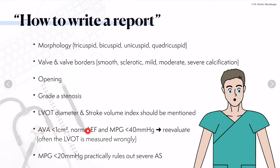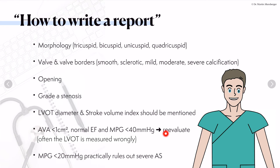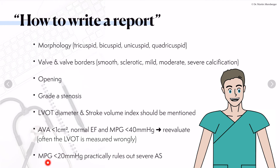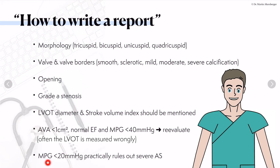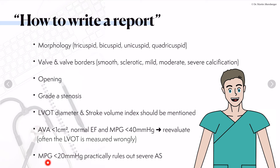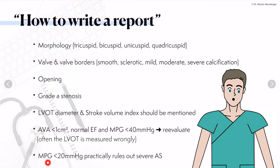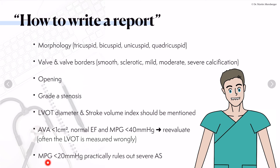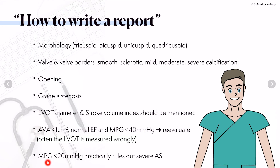If the aortic valve area is below one square centimeter in the case of a normal ejection fraction with a mean pressure gradient below 40 mmHg, always go back and reevaluate — especially re-measure the LVOT. It should be in the range of 20 mm; values between 18 and 22 mm are probably normal. If it is below 18 mm, the patient has to be rather small and slim. A large patient may exceed 22 mm, with 24–25 mm being possible. For example, a large male patient who is 2 meters tall with an LVOT of 14 mm — definitely something is off. Always compare the LVOT with the person you are scanning and adjust to body surface area.